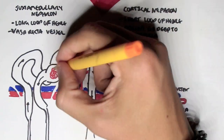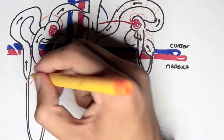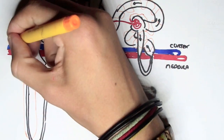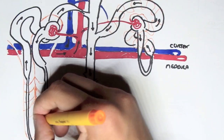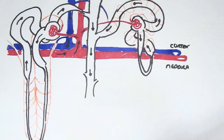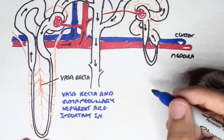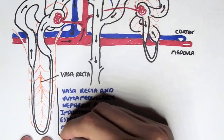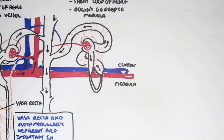The juxtamedullary nephron is different from the cortical nephron in that it has a vasa recta. The vasa recta is also a capillary-like structure formed after the efferent arterioles leave the renal corpuscle. What's important about the vasa recta is that it's like a straight vessel, and this enables serious secretion and reabsorption of water down the big loop of Henle. The vasa recta and juxtamedullary nephron are important in establishing the medullary osmotic gradient, and so help in water balance - to either make the urine concentrated or not as concentrated.